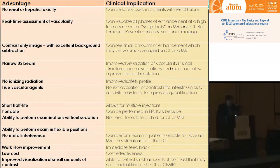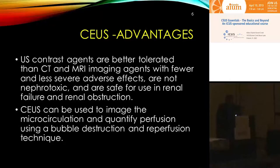There's no metal interference, so we don't have to worry about patients who can't get an MR. There's a real workflow improvement — we can make the diagnosis, decide if we need a second dose, and decide if we need to look somewhere else, all at the time of the examination. Low cost. These agents are better tolerated than CT and MR contrast, with fewer adverse side effects, are not nephrotoxic, and are safe for use in renal failure and renal obstruction. We can also evaluate microcirculation and quantify perfusion using a bubble destruction and reperfusion technique.